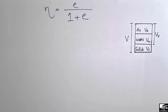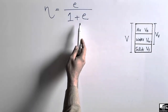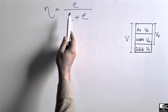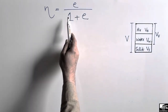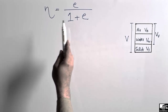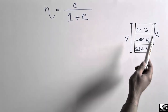Hello guys, welcome back to the Civil Engineering YouTube channel. Please subscribe to our channel for daily civil engineering videos. Today we are going to prove the relation between the porosity and the void ratio — that porosity n is equal to the void ratio e divided by 1 plus e.